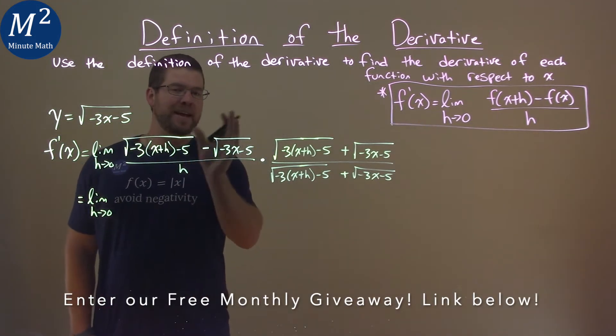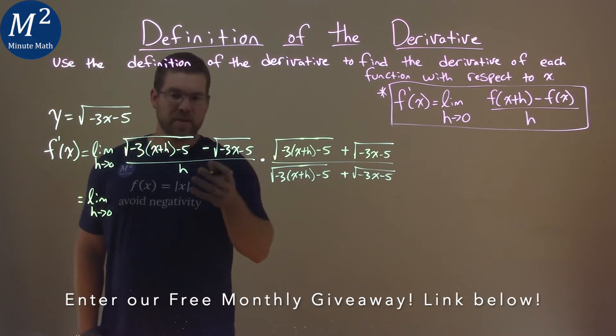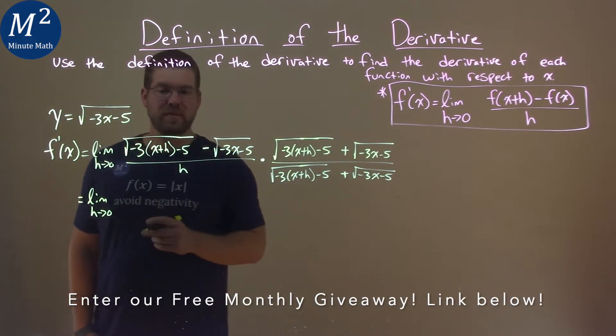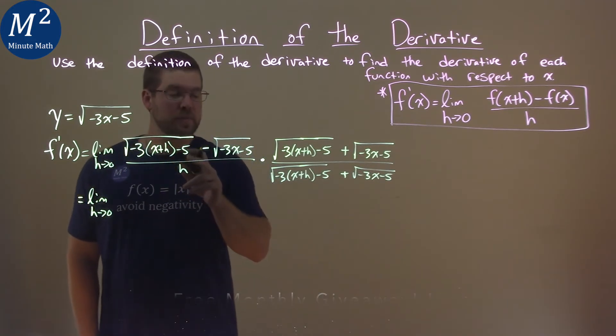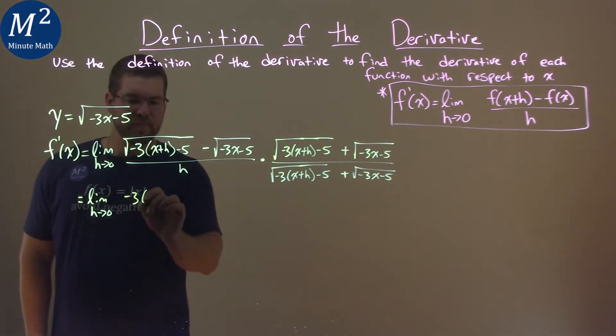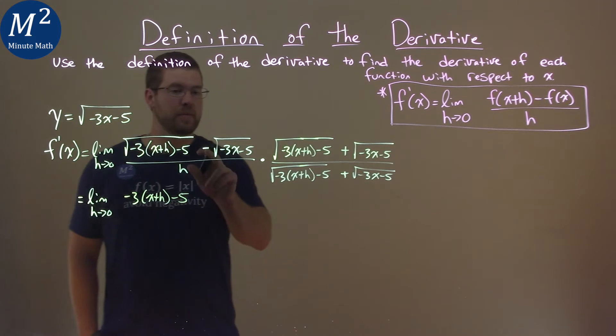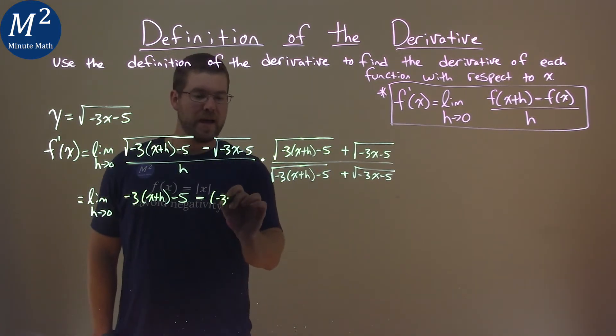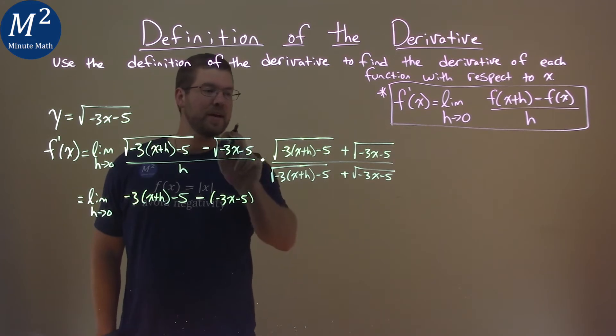Now, notice we multiplied out the inner term when we FOIL is going to cancel, and everything else here will get rid of the square roots. So, square root of negative 3 times x plus h minus 5 times itself is the same thing without the square root, negative 3 times x plus h minus 5. Same thing with the last part, minus negative 3x minus 5 when you multiply this and that.